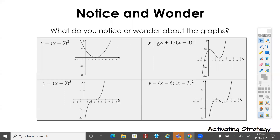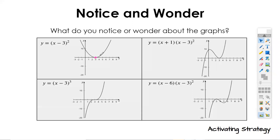So what do you notice? What do you wonder? One thing you're going to notice is that on here, all the x-intercepts have a three. But I want you to notice how the multiplicity is different for each of these. If we have a multiplicity of two, we're going to have a bounce — it's going to come down and then bounce back up.